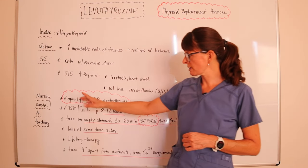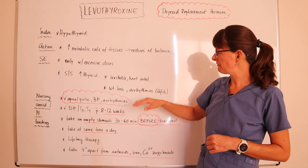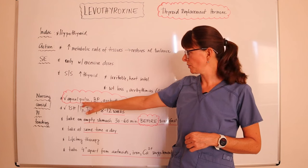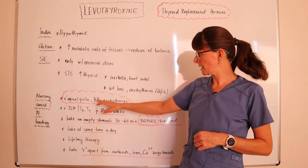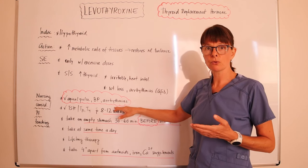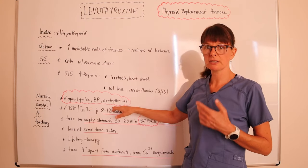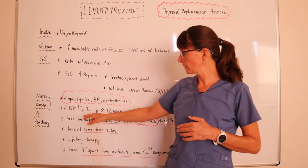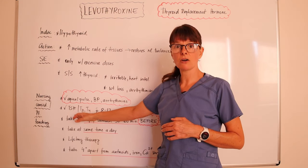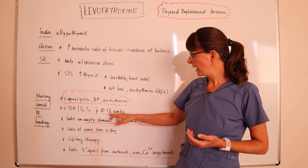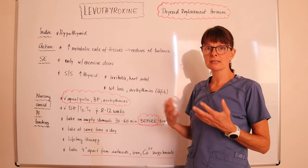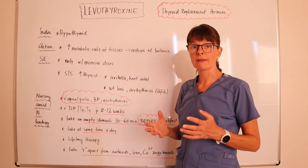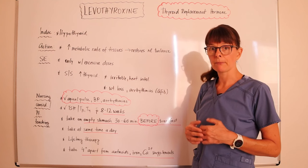For nursing considerations and patient teaching, because levothyroxine can affect arrhythmias, we want to check the patient's apical pulse and blood pressure before administering the medication. Listen carefully for a full minute when assessing the apical pulse to detect any arrhythmias or irregularities. The patient also needs a recheck of their thyroid hormone levels after about eight to twelve weeks of therapy, as it takes that long for hormone levels in the bloodstream to be detectable and change.